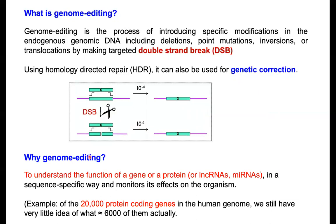Why genome editing? Genome editing has several advantages. It is not only useful for genetic correction, but also very useful for studying the basic biology of diseases and gene functions. We have around 20,000 genes, but we know the function of only about 6,000. For the remaining 14,000 genes — and non-coding genes including lncRNA and miRNA — we don't know their role in human cell growth and development. Genome editing can be used to make knockouts in particular genes and differentiate cells to study the role of these genes in disease biology.